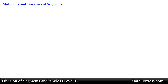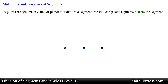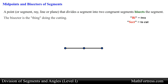In geometry we often work with segments that are divided in half. A point or segment, ray, line, or plane that divides a segment into two congruent segments bisects the segment. 'Bi' is a prefix that means two, and 'sect' means to cut. In this sense the bisector is the thing doing the cutting.